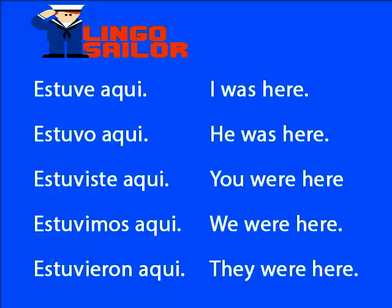Estas son algunas frases que dejan más claro cómo utilizar 'era' o 'eran': Estuve aquí — I was here. Estuvo aquí — He was here. Estuviste aquí — You were here. Estuvimos aquí — We were here. Estuvieron aquí — They were here. Repasa esta secuencia varias veces hasta que aprendas a utilizarla de manera correcta.